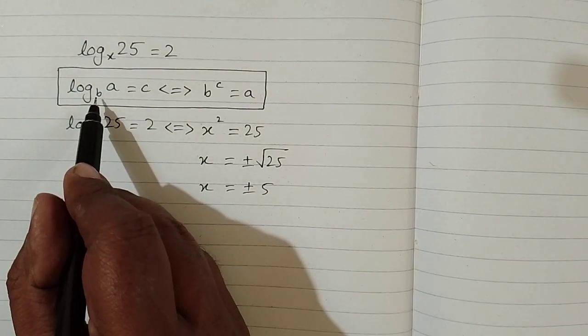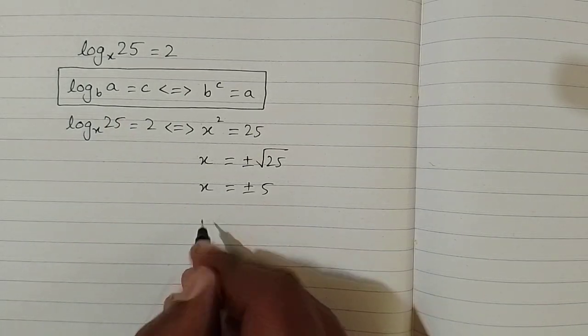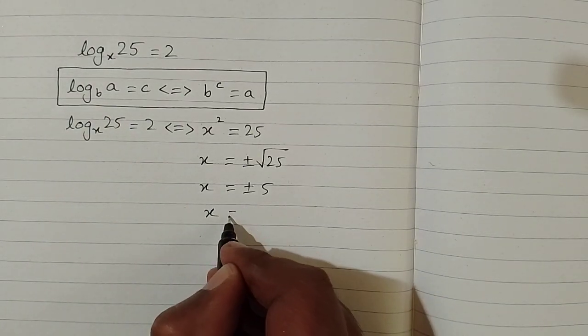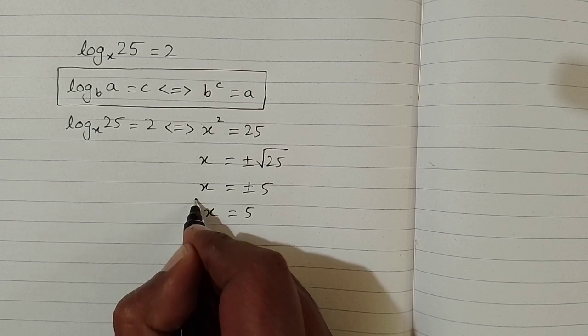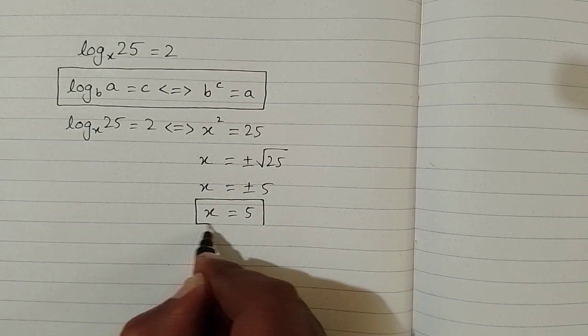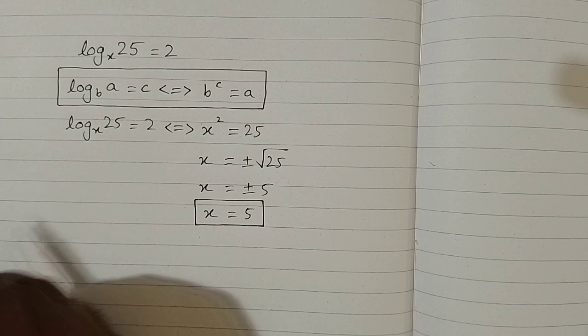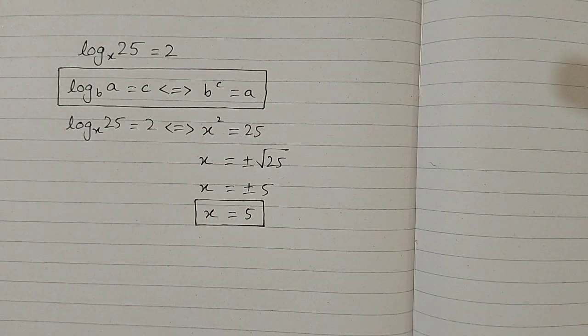But the base of the logarithm cannot be negative, so we can only consider the positive value. The value of x is only 5, and this is the solution of the given logarithmic equation.